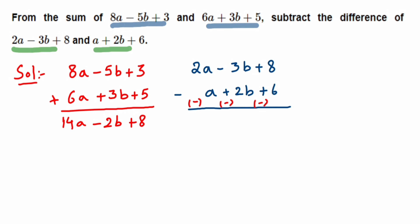Using the new signs: 2a minus a is 1a, or simply a. Then minus 3b minus 2b gives minus 5b. And 8 minus 6 gives plus 2. So the difference is a minus 5b plus 2.